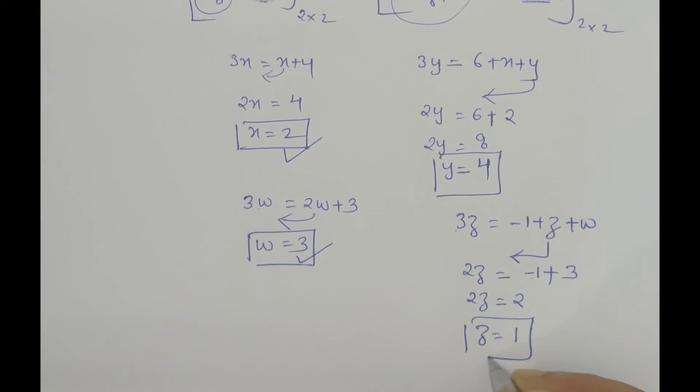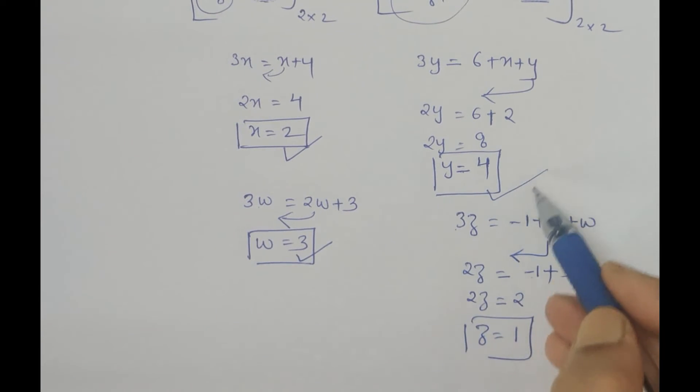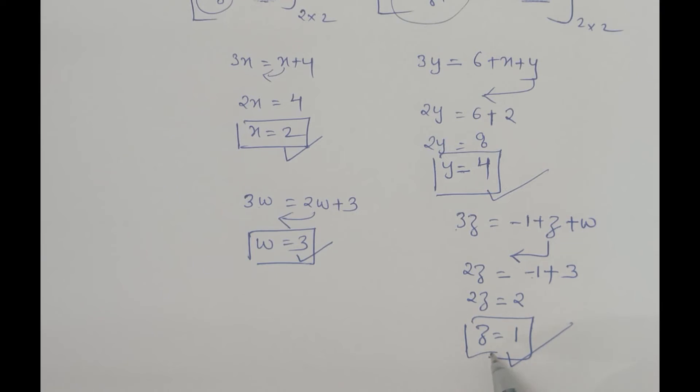So this is how we find the value of the unknowns when the question is based on matrices. Here it was given that the two matrices were equal, so we used the property of equal matrices to obtain the value of the unknowns.